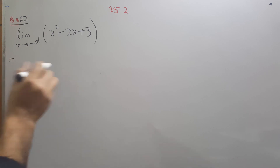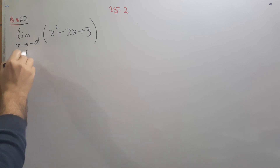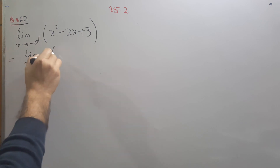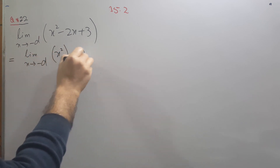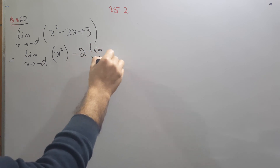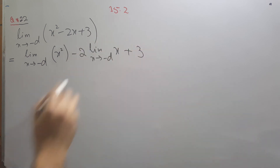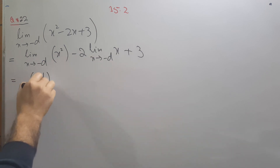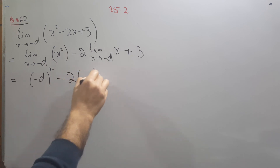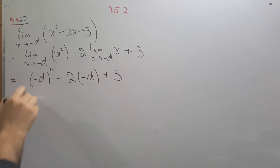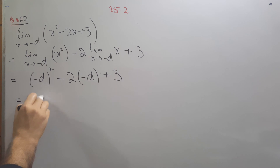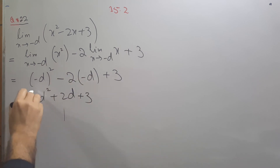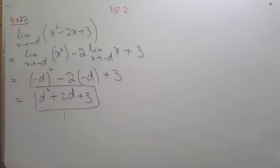The last question of this type: apply the limit on each part separately, limit as x approaches minus d. The constant 3 stays as is since the limit of a constant is the same value. Substituting x equals minus d: we get (minus d) squared plus 3, minus 2 times (minus d), plus 3. This simplifies to d squared plus 2d plus 3, which is the final answer.